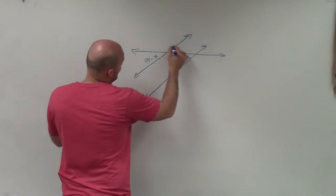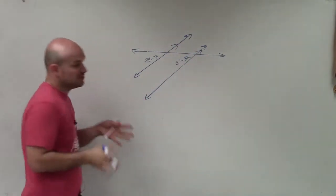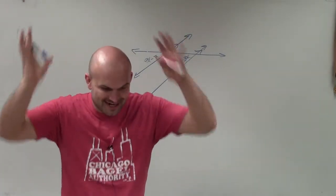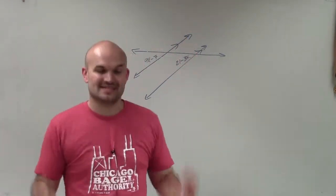The parallel lines, which I did not write in, are going to be right here. We know these lines are parallel. Therefore, we have angle relationships. When we see parallel lines and a transversal, angle relationships exist.